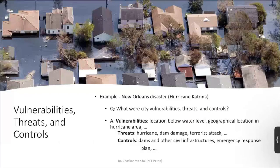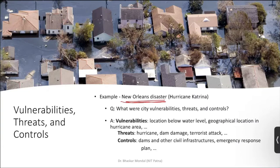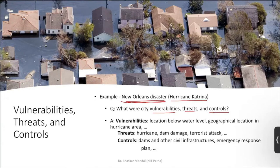Now if we take a real example, you will understand it very clearly. There was a hurricane called Katrina — quite a popular one, worldwide news headlines covered it. So the question is: what were the city's vulnerabilities, threats, and controls? Vulnerabilities include location below water level and geographical location in a hurricane-prone area.